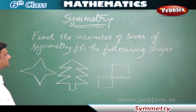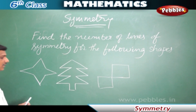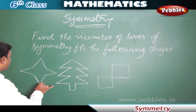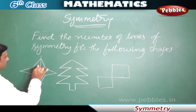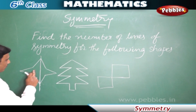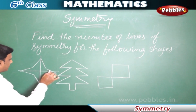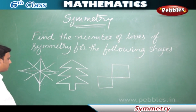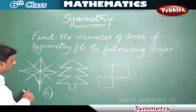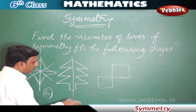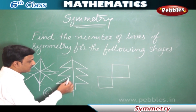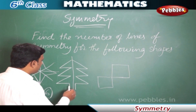Find the number of lines of symmetry for the following shapes. Here we have some shapes. Let us look at the first shape — by drawing a vertical line we can make two identical parts. In the same way, a horizontal and diagonal line also work. So total it has six lines of symmetry. Let us come to the second one — here only the vertical line of symmetry can make the figure into two identical parts, so it has got only one line of symmetry.